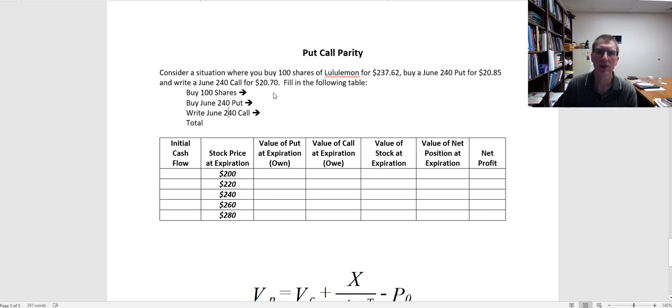So let's look at what it costs me to establish the position. I buy 100 shares of the stock, so that's going to be an outflow, we make that negative. 100 times 237.62 is going to give me negative $23,762 to buy the stock.